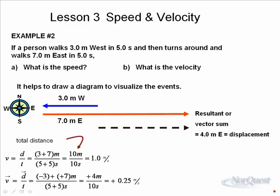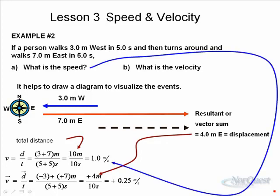And of course, there's your total distance, there's your total displacement. To find the speed, we take distance over time. To find the velocity, we take displacement over time.